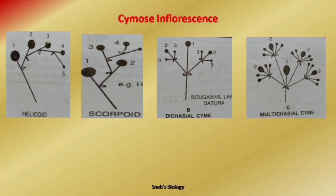The characteristic feature retained in all types is that the main axis always terminates into a flower. Depending on the number of branches produced, we have uniparous, biparous, and multiparous cymes. In uniparous cyme there are two possibilities: all branches on the same side (helicoid, seen in Solanaceae), or in zigzag pattern (scorpioid, seen in Ranunculus). Two branches every time is biparous; many branches every time is multiparous.